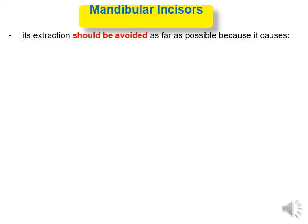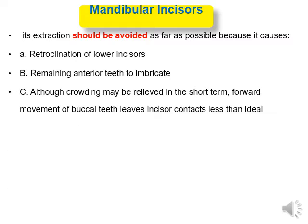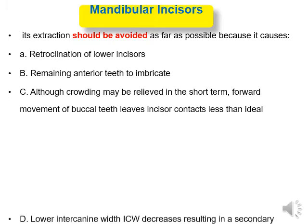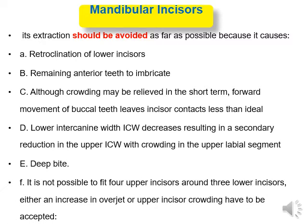Mandibular incisors: their extraction should be avoided as far as possible because it causes retroclination of the remaining lower incisors. Although crowding may be relieved in the short term, forward movement of buccal teeth leaves the incisor contacts less than ideal. Lower intercanine width decreases, resulting in a secondary reduction in the upper intercanine width with crowding in the upper labial segment, and it causes deep bite. It is not possible to fit four upper incisors around three lower incisors — either an increase in overjet or upper incisor crowding has to be accepted.